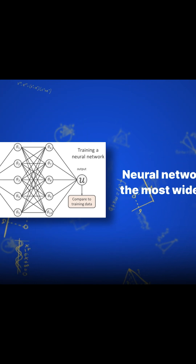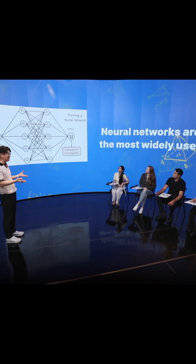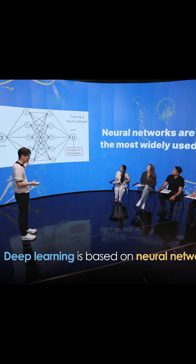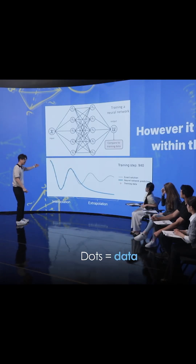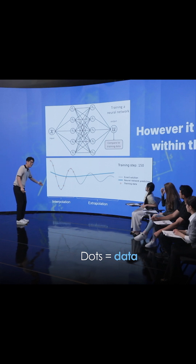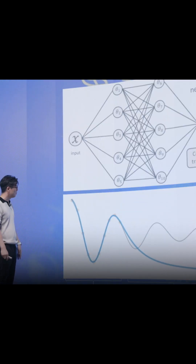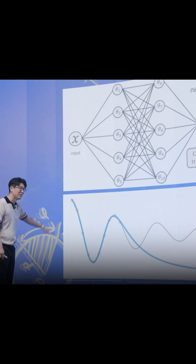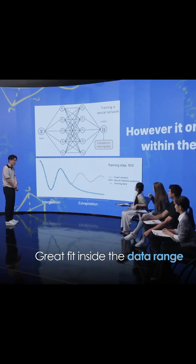which mimics our neuron structure. You may have heard about deep learning — that's based on this kind of neural network. So how this neural network works is: dots are data. And then, let me ask this neural network to identify the function which mimics this data. You can see that it beautifully fits the data well,